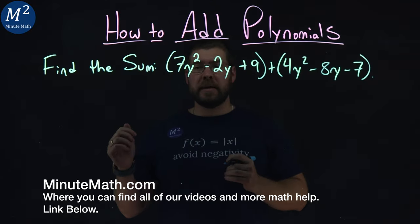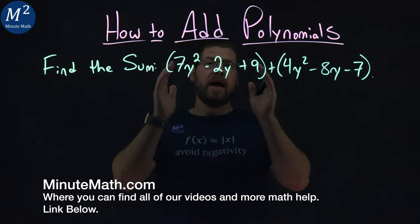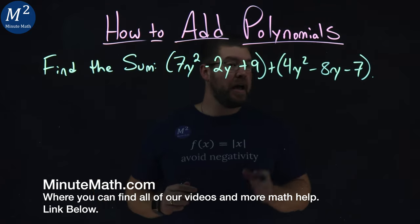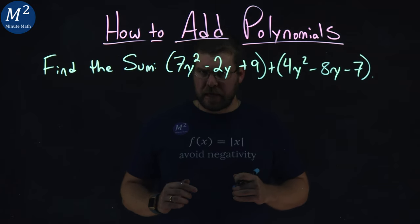We're given this problem here: find the sum. We have two polynomials: 7y² - 2y + 9 and 4y² - 8y - 7.